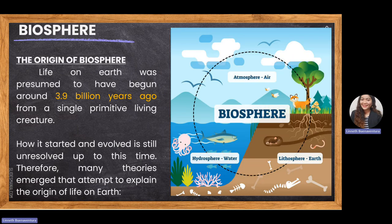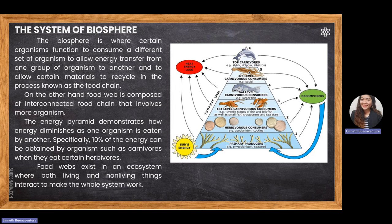The origin of the biosphere: life on Earth is presumed to have begun around 3.8 to 3.9 billion years ago from a single primitive creature or bacteria known as cyanobacteria, called stromatolites. There are still several theories and hypotheses attempting to explain where and how life started. Today we understand how life works and how all living things interact with each other.